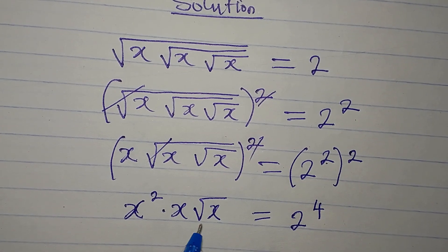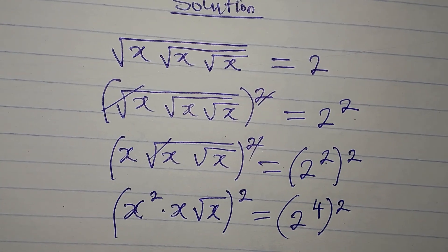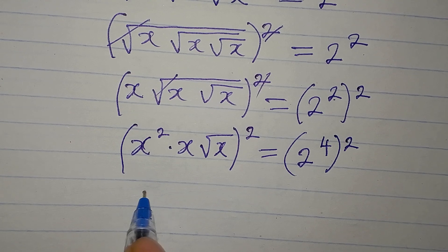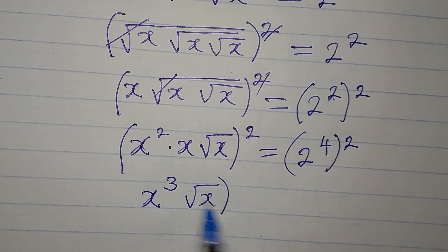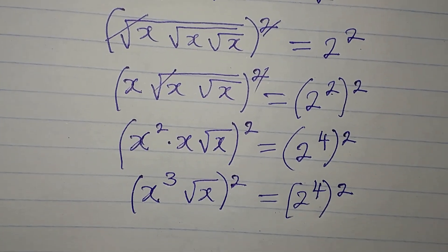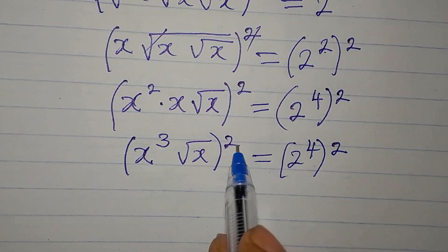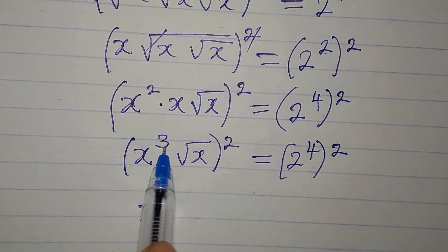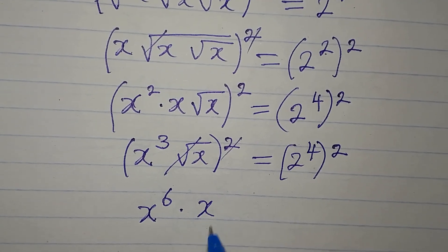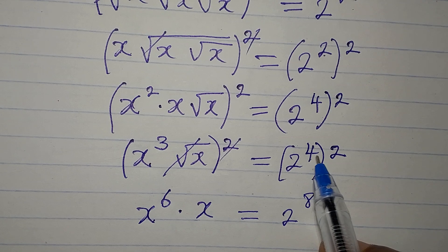We still have more square roots, so we square the whole expression one more time. Inside we can simplify: x times x squared times x gives us x to the power of 3, and we still have √x. On the other side, 2 to the power of 4 is squared, giving 2 to the power of 8. Squaring x to the power of 3 — since powers multiply — gives x to the power of 6, then times x gives us x to the power of 7 on the left.